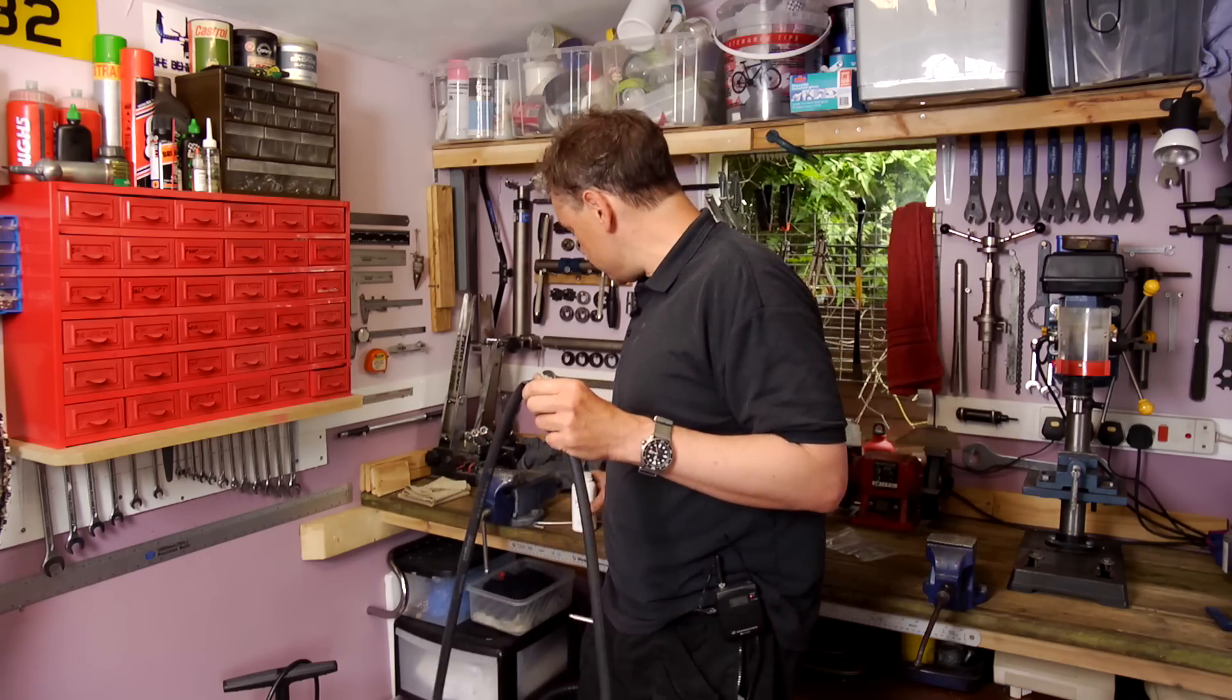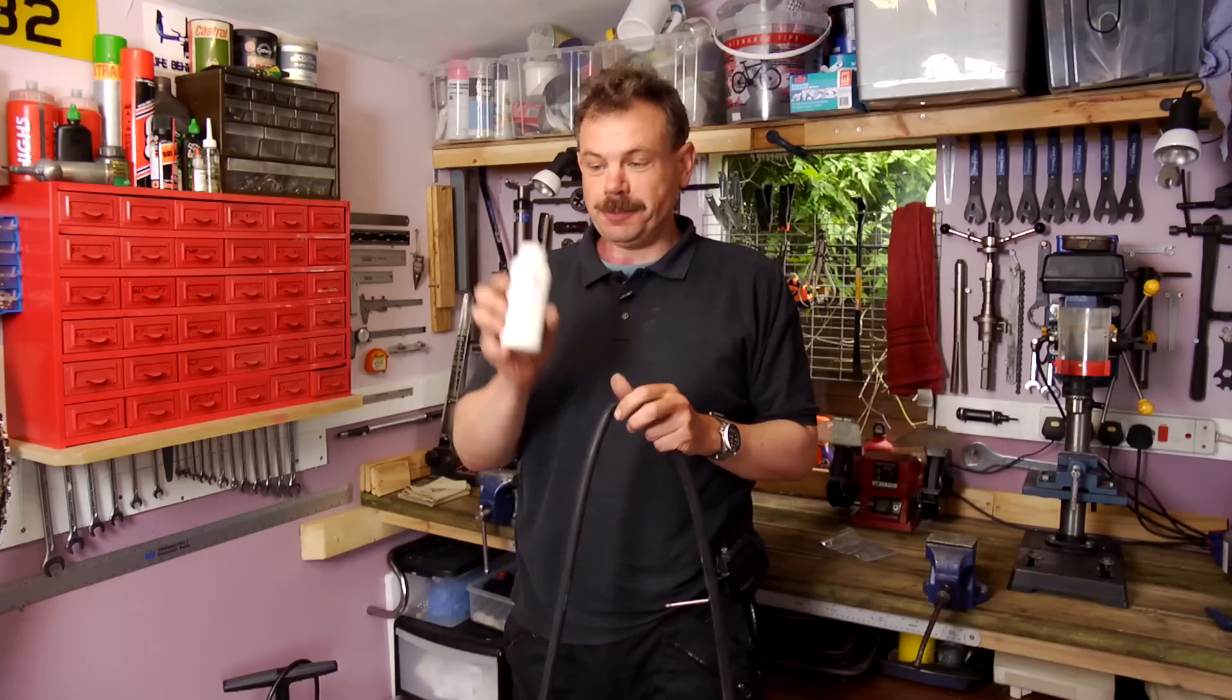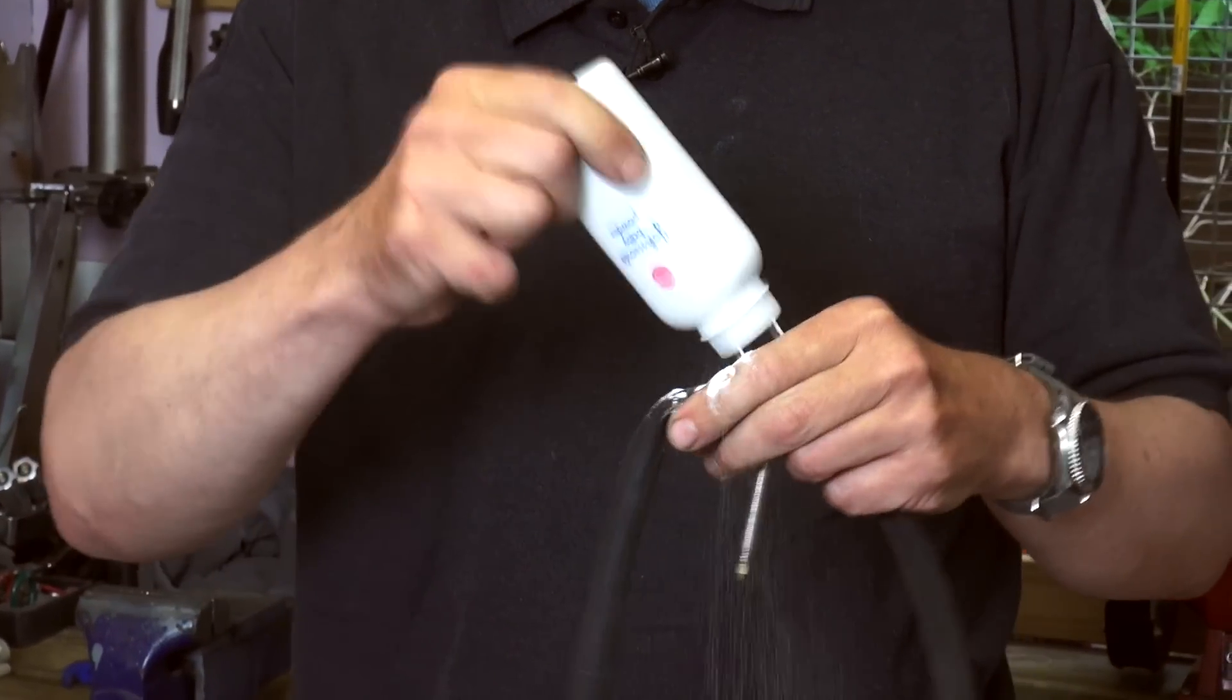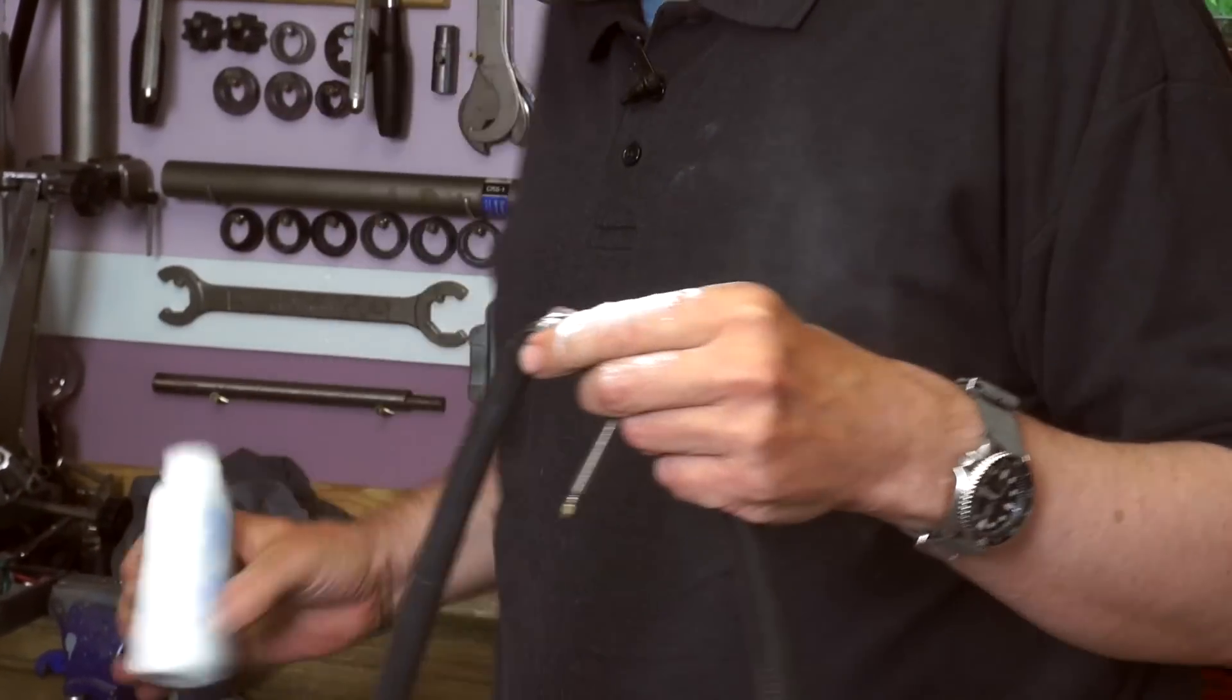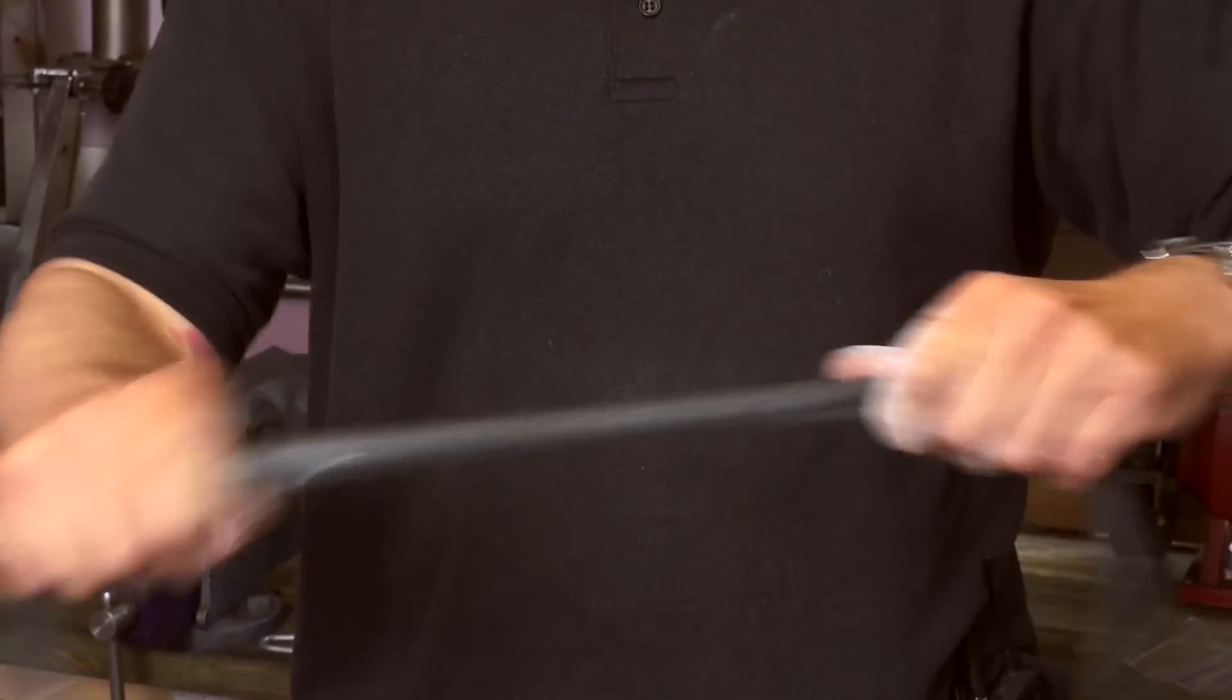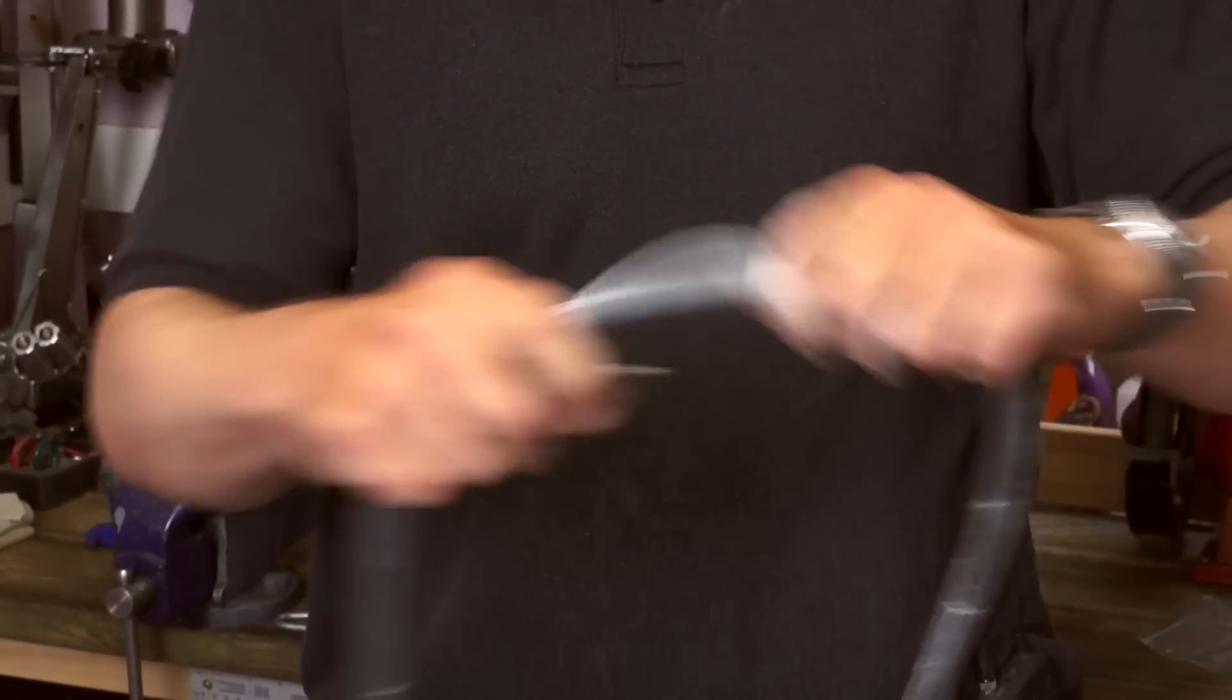So the first thing to do is go to your bathroom cabinet and grab the talcum powder. Just get your inner tube. I normally sprinkle it into my hand and then make sure the tube has a good covering of powder.